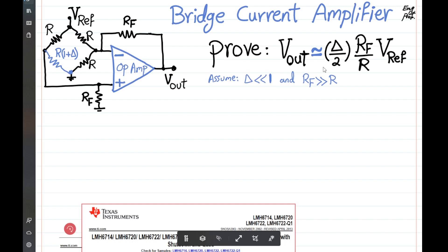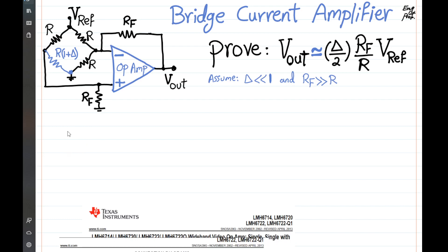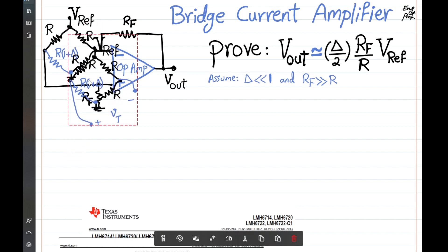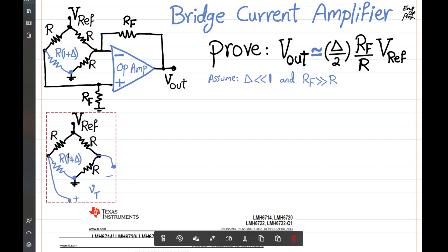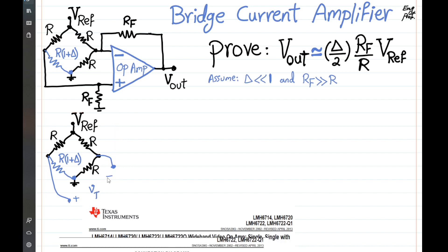We want to prove that V-out is related to V-ref via a simple formula — essentially a current amplification. To do that, I want to find the Thevenin equivalent for this combination of four resistors, so that the circuit is simplified. So we need to find V-Thevenin and R-Thevenin looking into these two terminals.